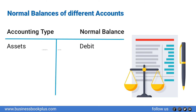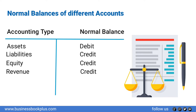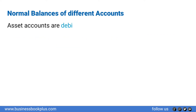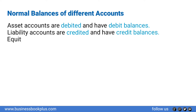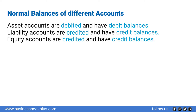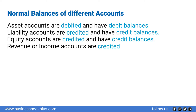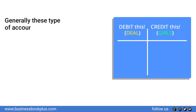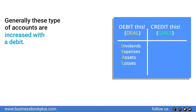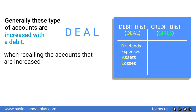Normal balances of different accounts: assets have debit balances; liabilities, equity, and revenues have credit balances; expenses have debit balances. These types of accounts are increased with a debit: dividends, expenses, assets, and losses. You might think DEAL when recalling the accounts that are increased with a debit.